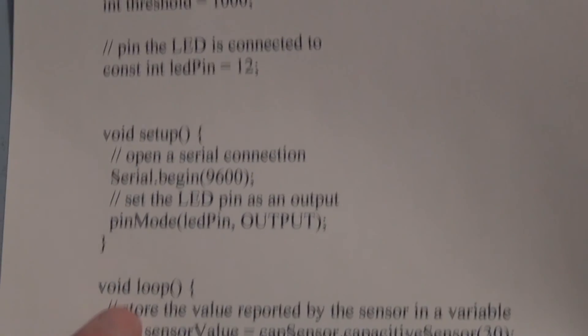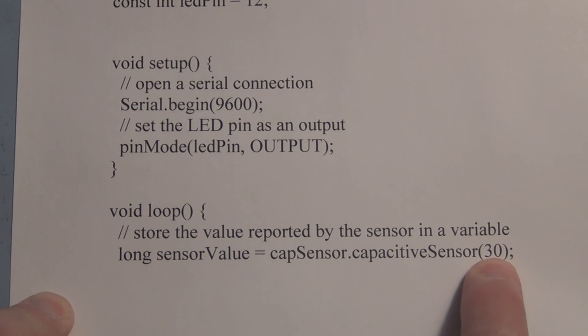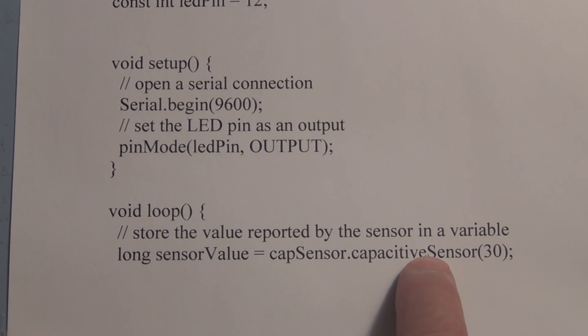Then we start the loop. We're using the cap sensor dot capacitive sensor, and this number here is the number of samples we're going to take. It's going to sample the difference between the signal that's being sent and the signal that's being received, and it's going to return that value into sensor value which is of type long.